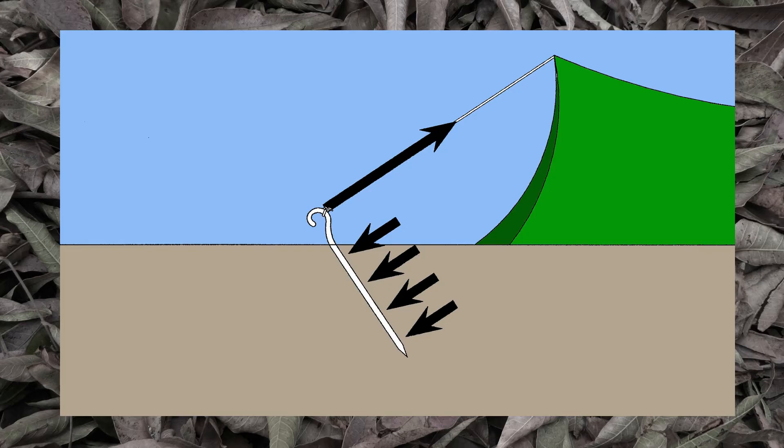Yes, there are complications, in part because the guy line is pulling on one end of the stake. But if the stake isn't moving, that means that all the directional forces acting on the stake add up to a directional force of zero.